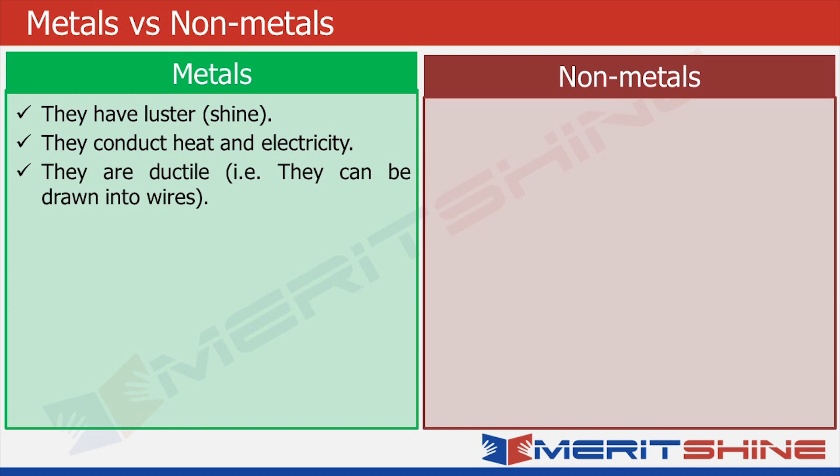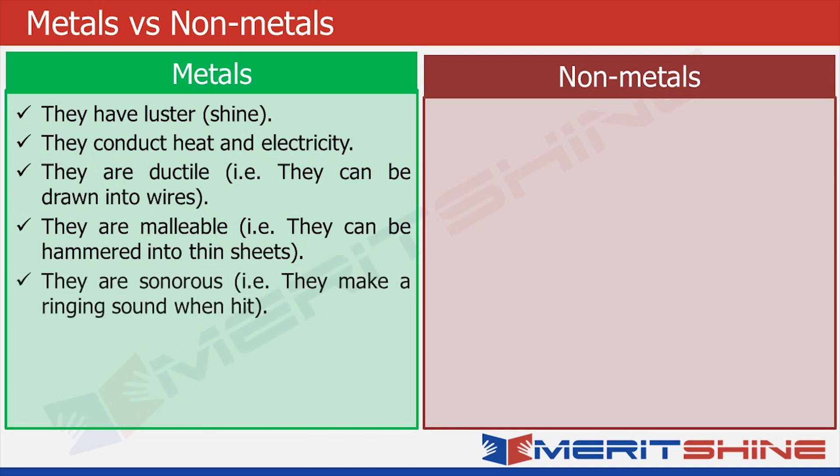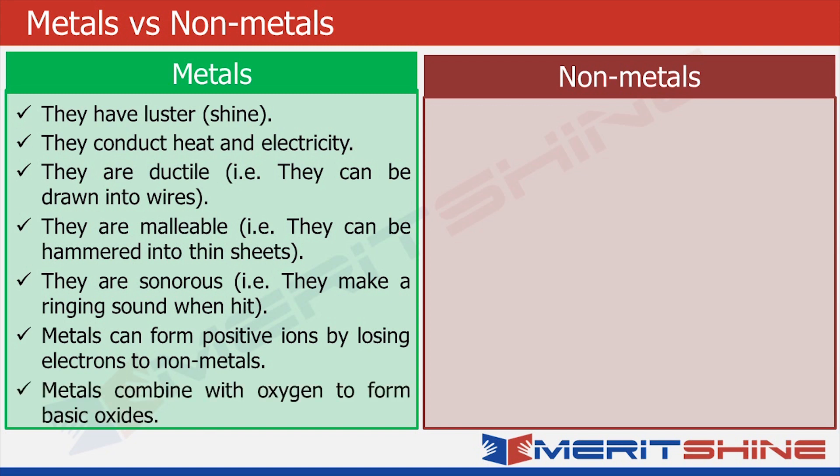They are ductile, that is, they can be drawn into wire. Gold is the most ductile metal. They are malleable, which means they can be hammered into thin sheets. They are sonorous, that is, they make a ringing sound when they are hit. And metals can form positive ions by losing electrons to non-metals. Metals combine with oxygen to form basic oxides.